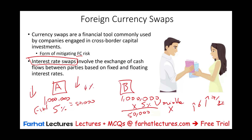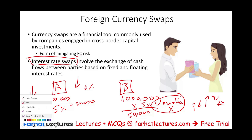Since Company A has good credit and got a fixed rate, but is comfortable with a variable rate, what they will do is switch the payments. They say, 'We'll take over your loan agreement, we'll take over your variable rate.' Because B is not comfortable with the variable rate going up, and A thinks it's going to go down, they exchanged the payments.